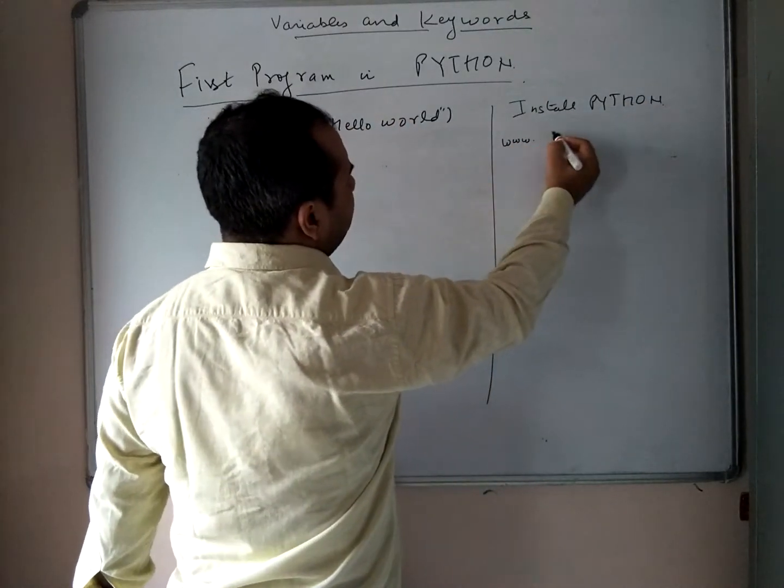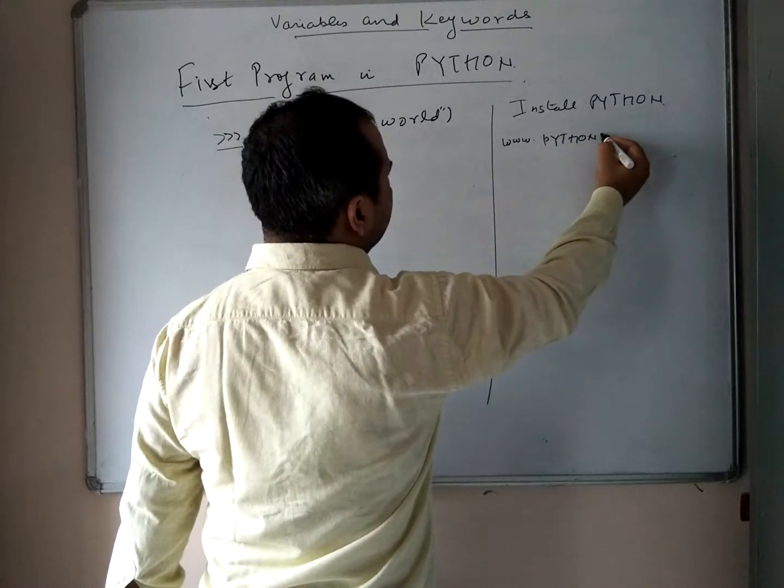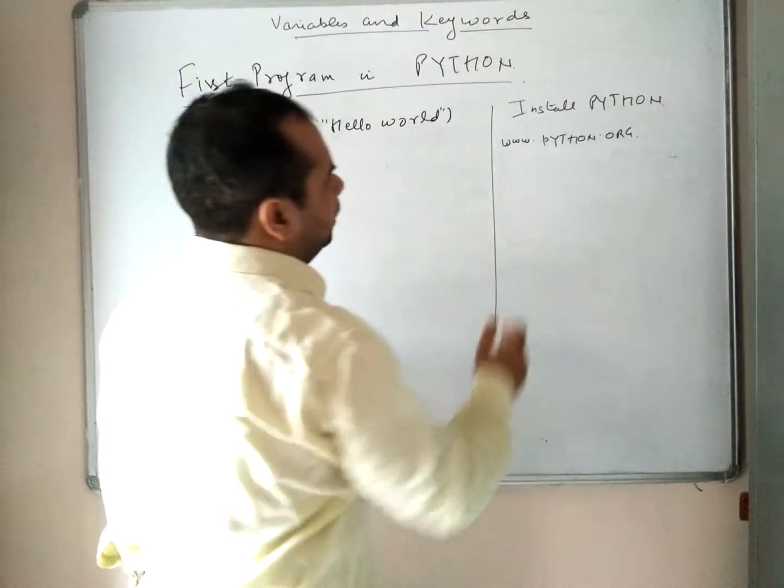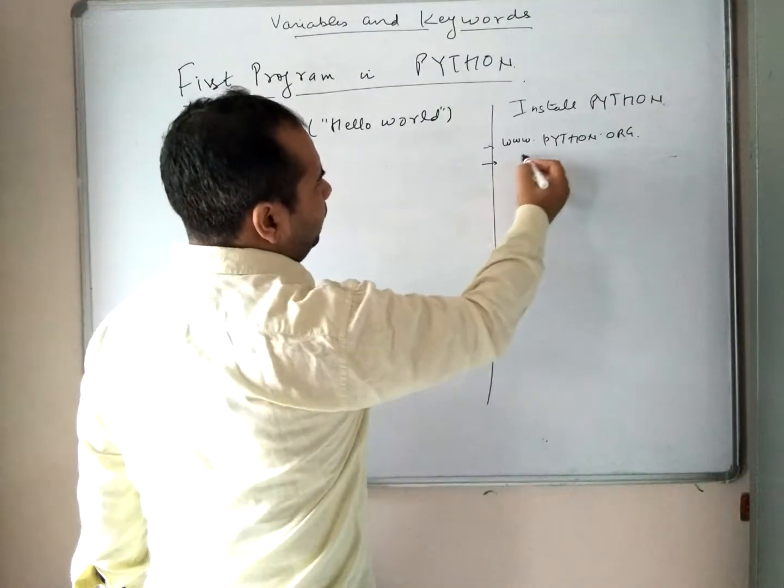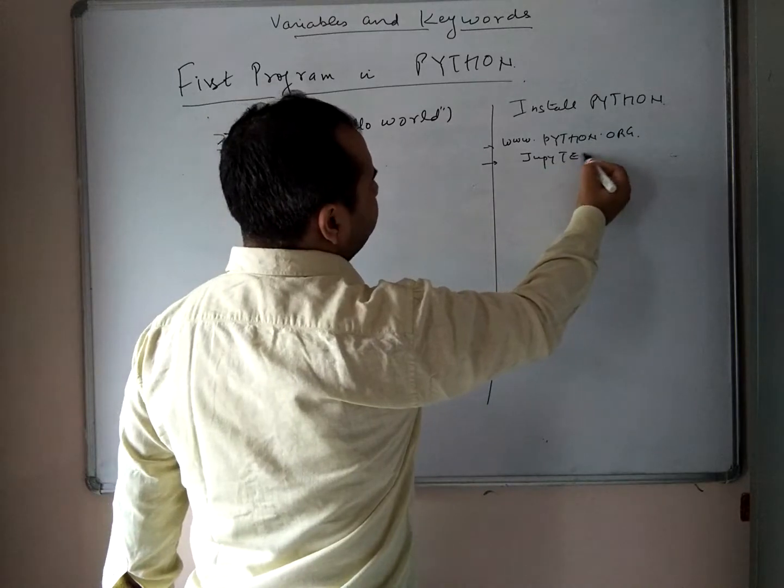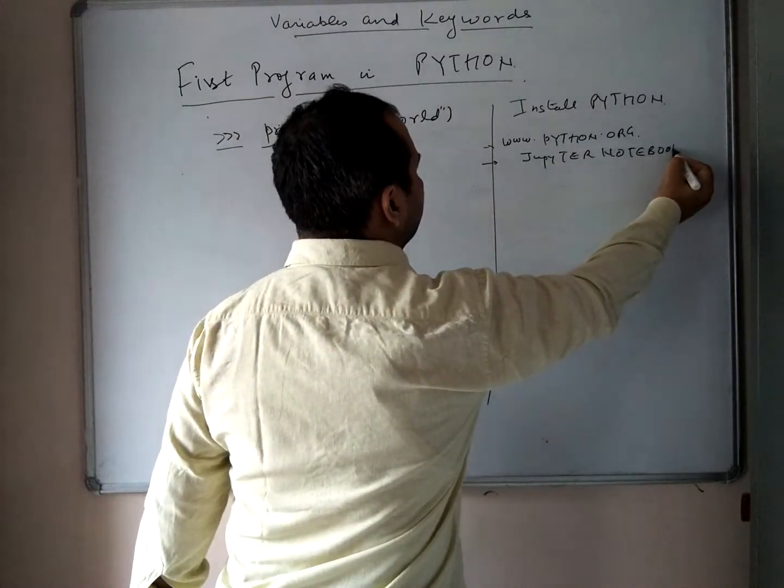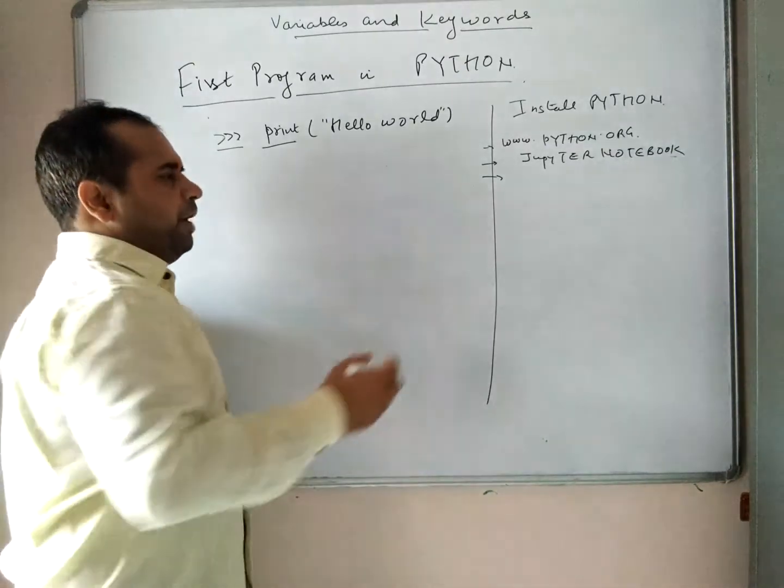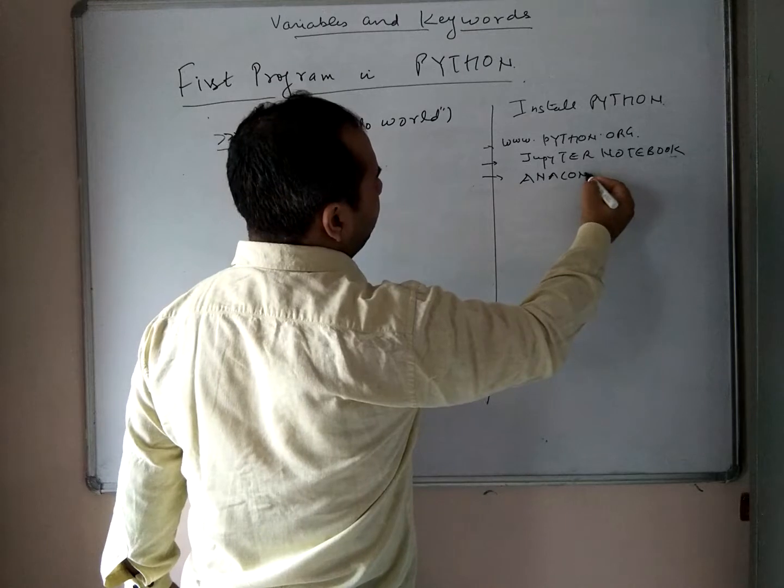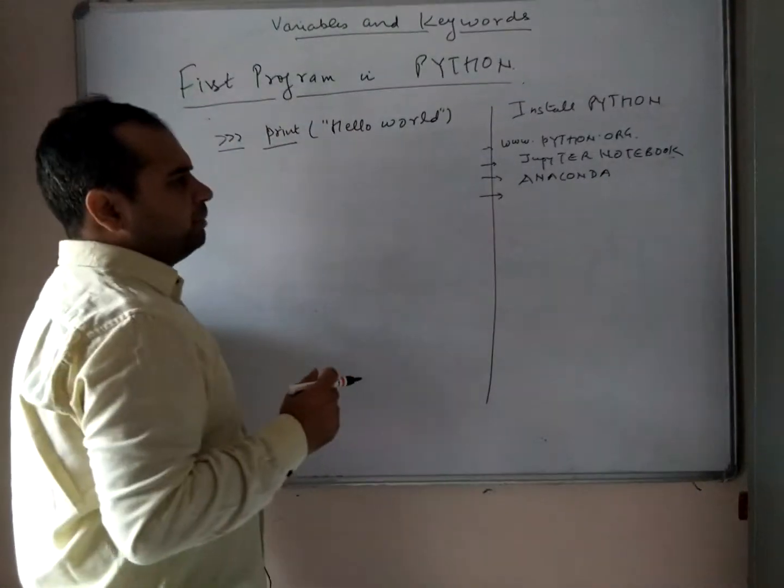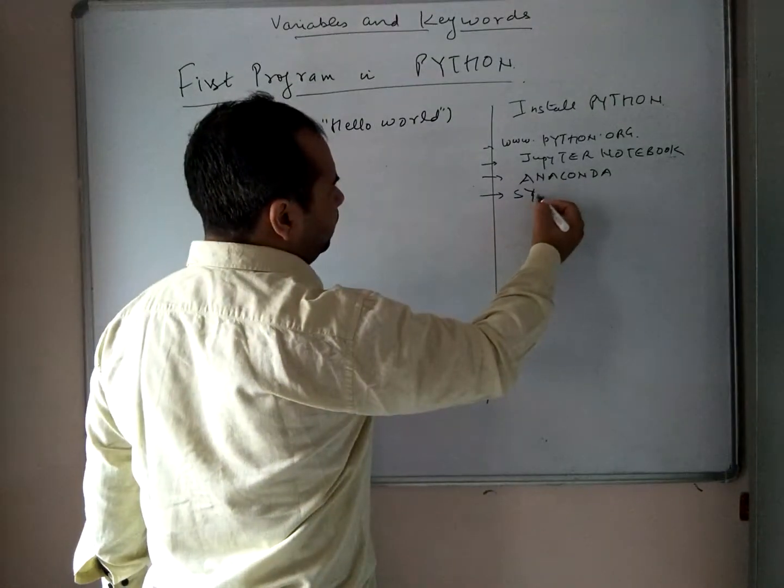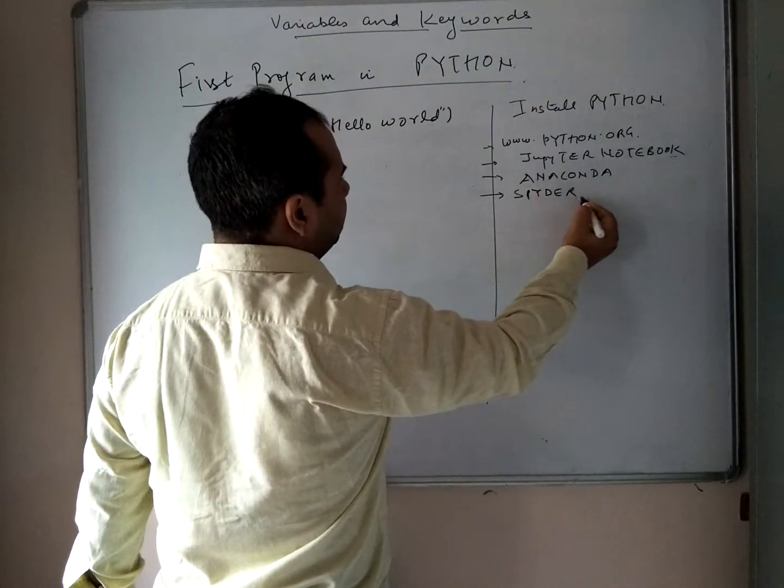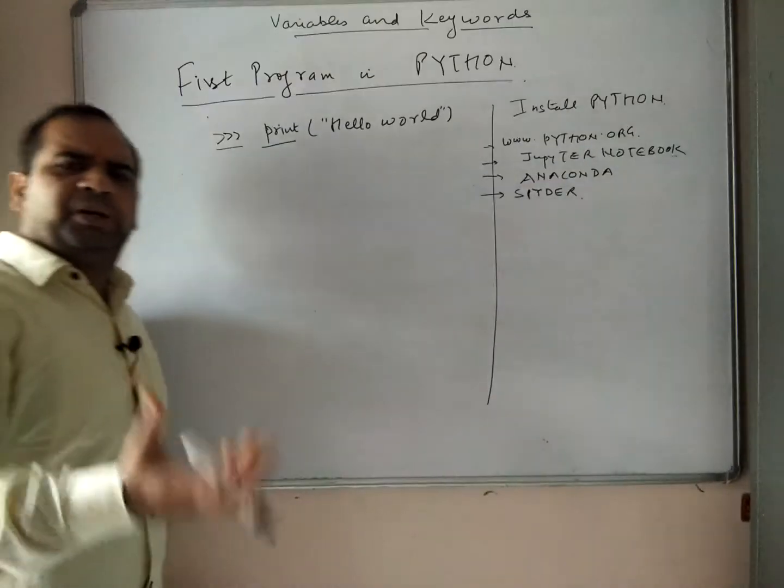There is a website python.org—of course in small letters. You can go there and simply download Python, or you can download Jupyter Notebook, or you can download big IDEs—as in Java we have NetBeans, similarly we have Anaconda. You can also download Spyder. In this way, you have multiple options to download Python.